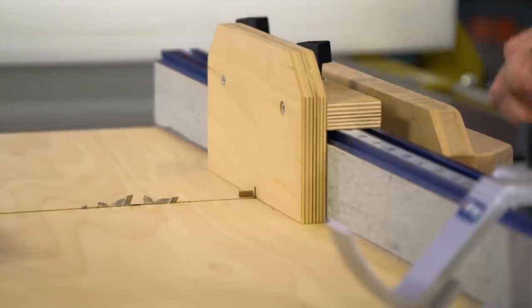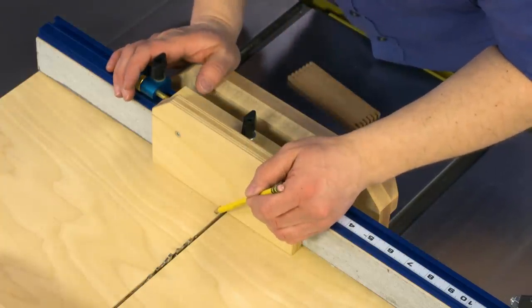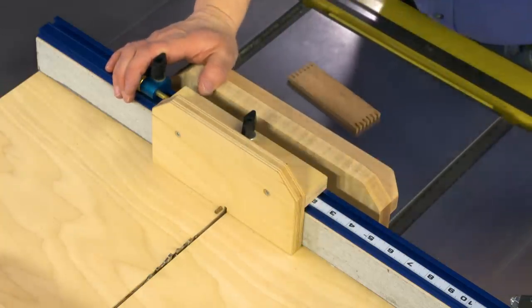The key part about making and using a finger joint jig is getting that relationship between the key and the slot for the blade just right.